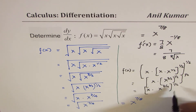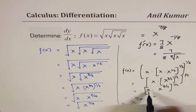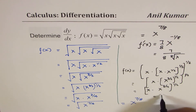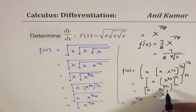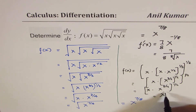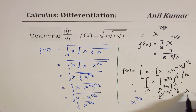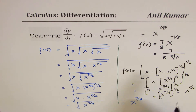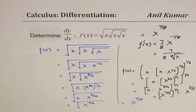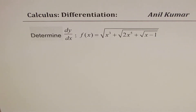That gives x times x^(3/4), all to the power of 1/2. Adding the exponents: x^(7/4) to the power of 1/2, which is x^(7/8). You get the same result using the exponent form. Either way, you've understood how to solve such a question.